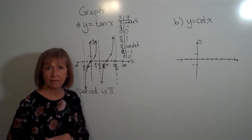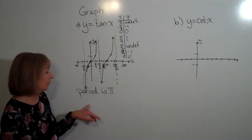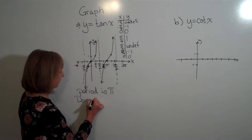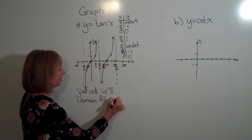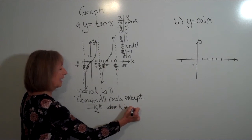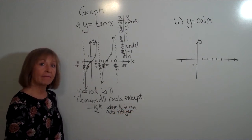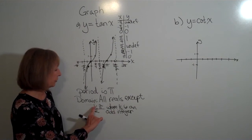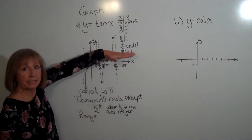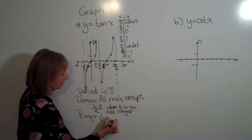The period for tangent of x is pi — not 2 pi like the period for sine x, cosine x, secant x, or cosecant x, which are all 2 pi. The domain is all reals except k pi over 2 where k is an odd integer. For the range, scanning from bottom to top, y goes from negative infinity all the way to positive infinity, so the range is negative infinity to positive infinity.